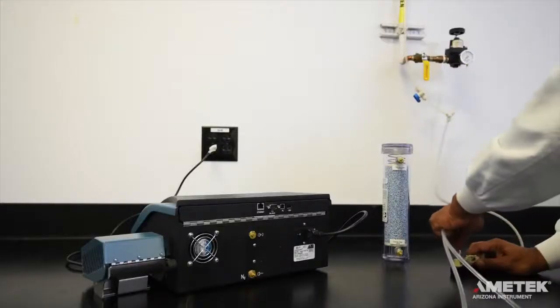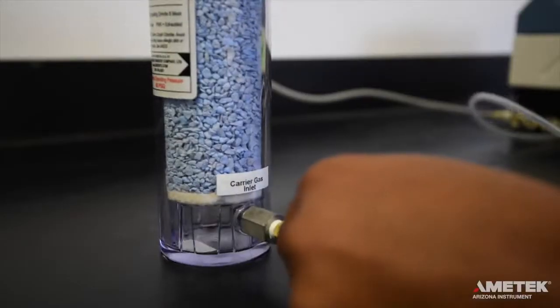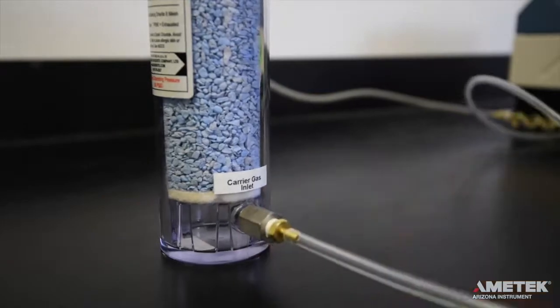If the location where the instrument is to be used is plumbed with nitrogen or compressed air, or if you plan on using a compressed gas cylinder, use the clear tubing from the accessory kit to connect the dry gas source to the carrier gas inlet port on the desiccator.